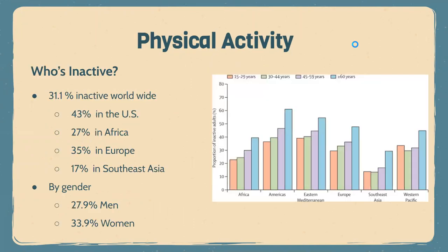You would think with all these benefits of physical activity that more people would engage in it, but that simply is not the case. A large percentage of people worldwide are inactive. Worldwide, 31% do not engage in the recommended amounts. The U.S. has the highest amount at 43%, followed by Europe at 35%. Countries with the highest income, like Europe and the U.S., typically have the highest rates of inactivity, compared to 27% in Africa and only 17% in Southeast Asia — so the richer the country, the less physical activity engaged.